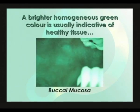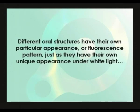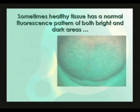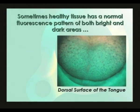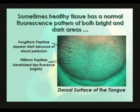Here we see the buccal mucosa with the highly fluorescing teeth on the right of the picture. With fluorescence visualization, different oral structures have their own particular appearance or fluorescence pattern, just as they have their own unique appearance under white light. Here we see healthy tissue that is a generally homogenous pattern of bright and dark areas. The dark spots are the fungiform papilla that appear dark because of blood perfusion, and the smaller bright spots are the filiform papilla, which have keratinized tips that fluoresce brightly under Velscope. Blood is a strong absorber and causes the perceived fluorescence to decrease, and keratin fluoresces strongly, which causes the perceived fluorescence to increase.